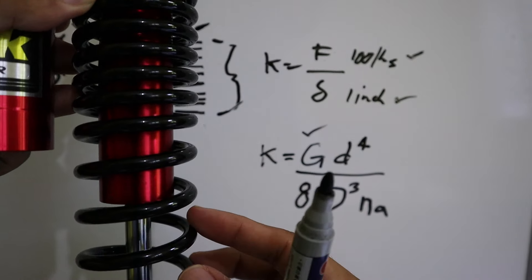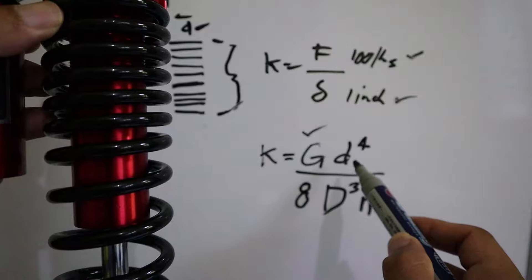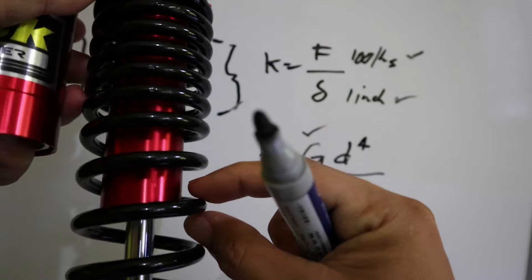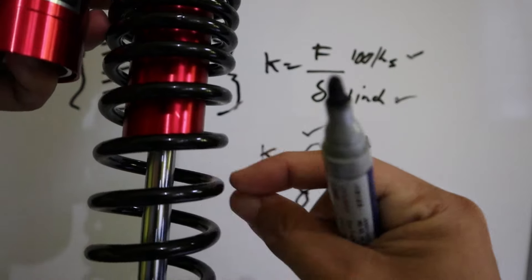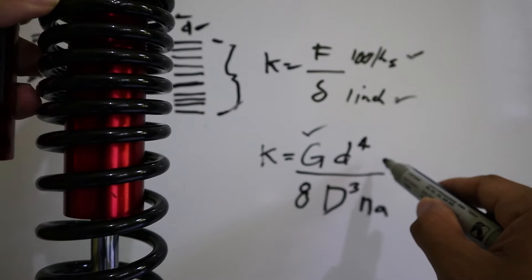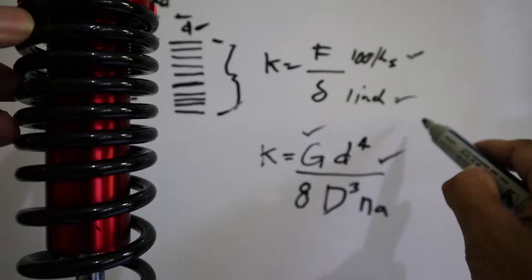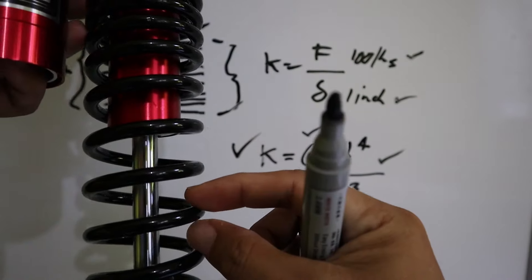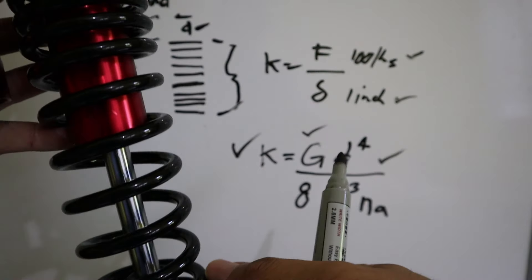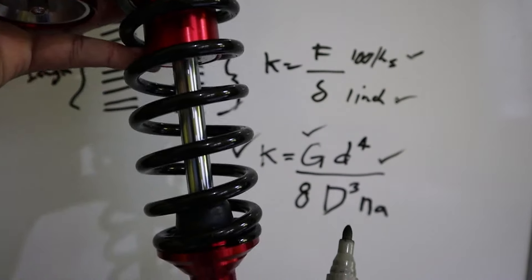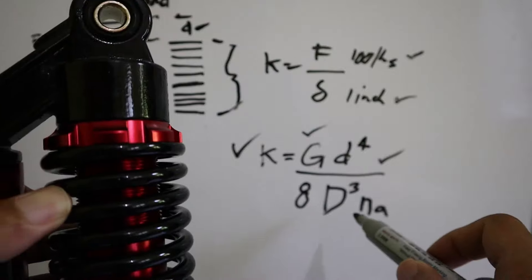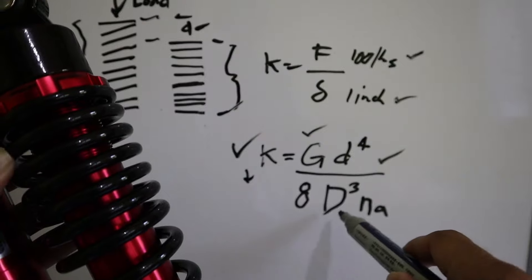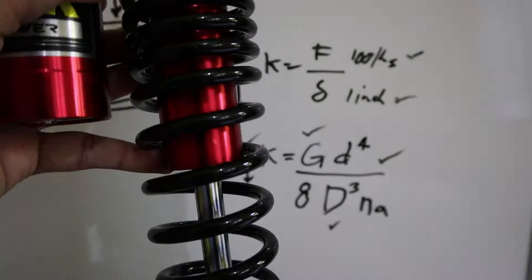Whatever steel was used carries a value. Then there's 'd,' the wire thickness — how thick these wires are. Since it's in the numerator, the thicker the wire, the stiffer the spring rate. The factors in the denominator: a higher denominator value lowers the spring rate value, making the spring softer.